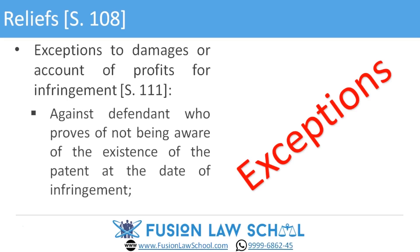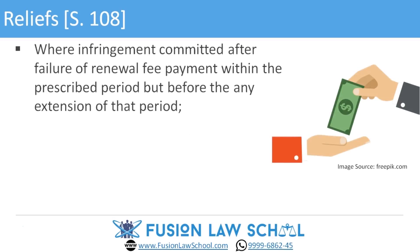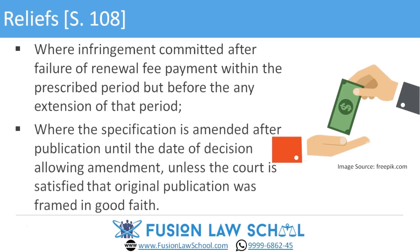There are restrictions on the power of the court to grant damages or an account of profits for infringement, governed by Section 111. These restrictions apply: against a defendant who proves he was not aware of the existence of the patent at the date of infringement; where infringement was committed after failure to pay a renewal fee within the prescribed period but before extension of that period; and where the specification was amended after publication until the date of the decision allowing amendment, unless the court is satisfied the original specification was framed in good faith. However, these restrictions do not affect the court's power to grant an injunction.